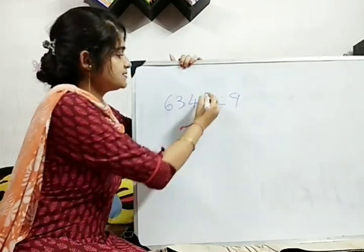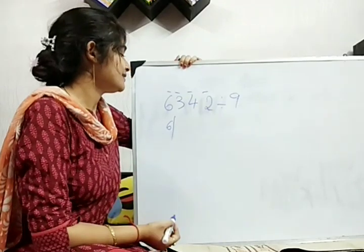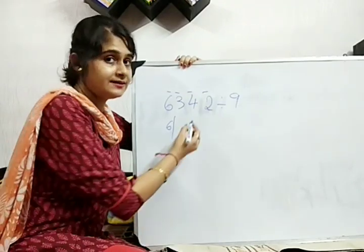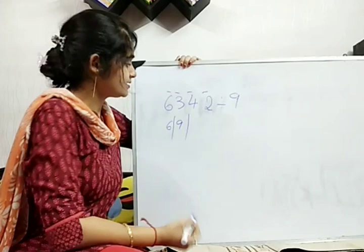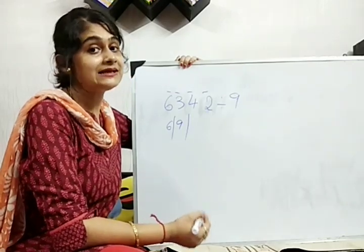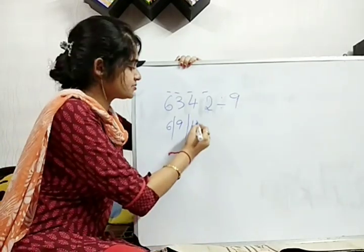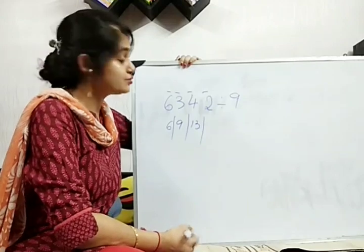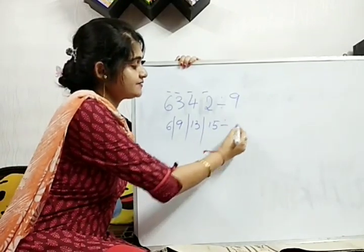Now, here also, single, single number we will take. 6 I have taken. Now, 6 plus 3 gives me 9. Okay? 9 I have taken. 9 plus 4 gives me 9, 10, 11, 12, 13. So, 13 I have taken. 13 plus 2 gives me 15 I have taken. Divided by 9.